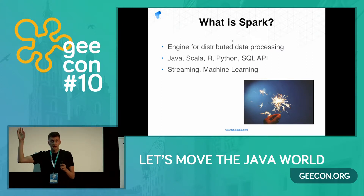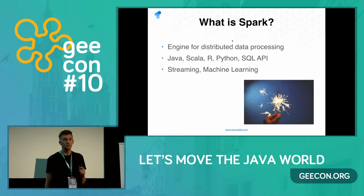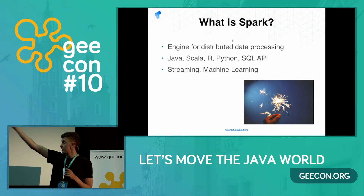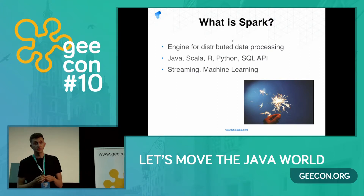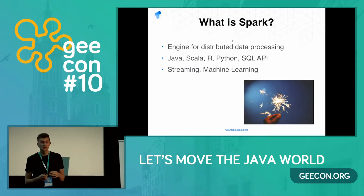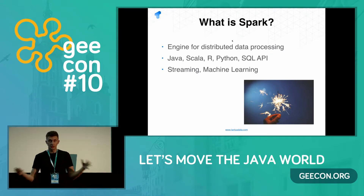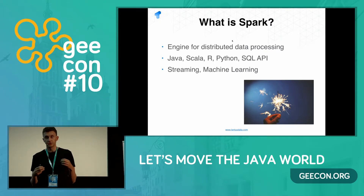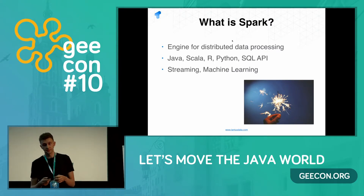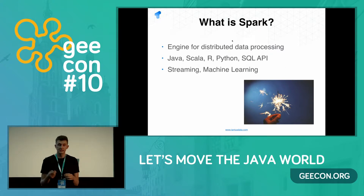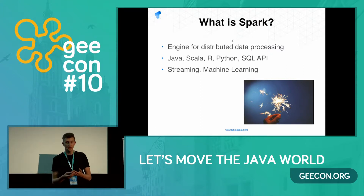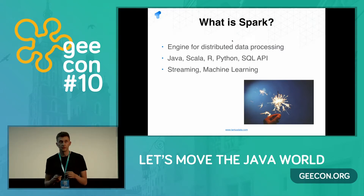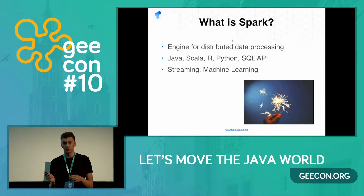Spark is a general engine for distributed data processing. That means you can express your business logic in one of its supported languages, and Spark will take care of distributing the load and executing the business logic on multiple machines. Spark has streaming and machine learning APIs, but today we're going to focus on the core of Spark.